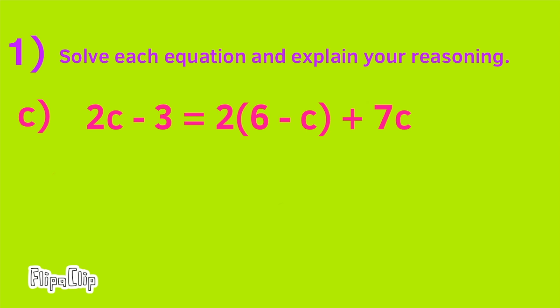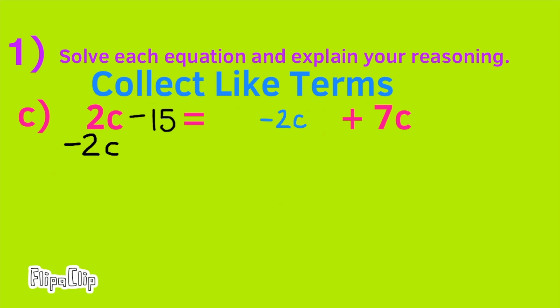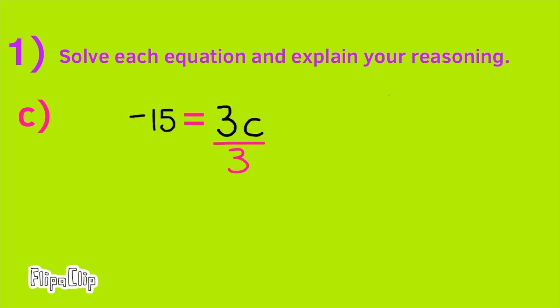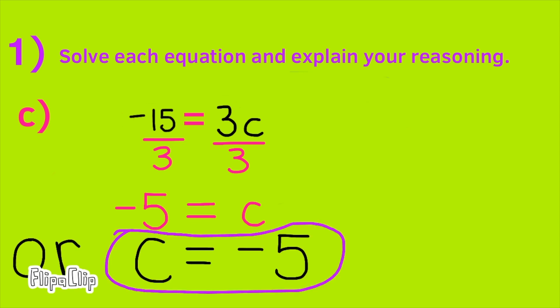C. Collect like terms. 2 times 6 is 12. Minus 2 times C. 12 minus 2C. Take away 12 from both sides. Negative 3 minus 12 is negative 15. Subtract 2C from both sides. Negative 4C plus 7C. That's the same as 7C minus 4C. Divide each side by 3. 1C or C equals negative 5. Negative 5 equals C or C equals negative 5.